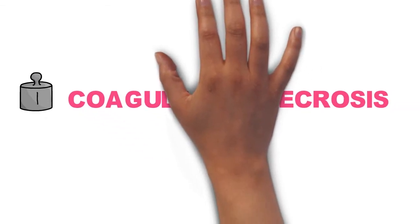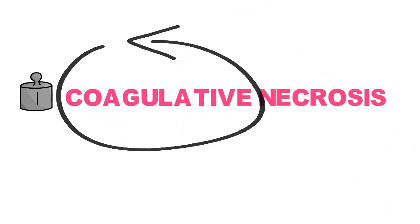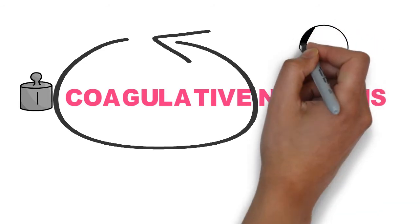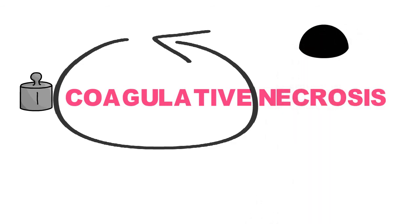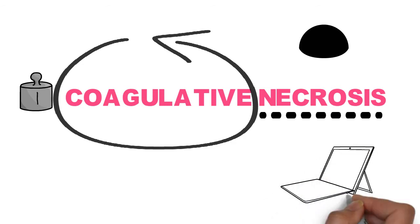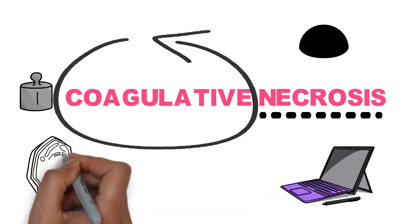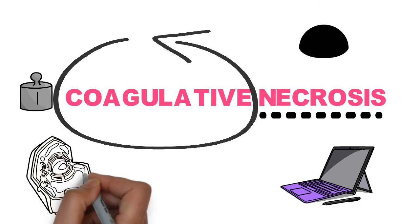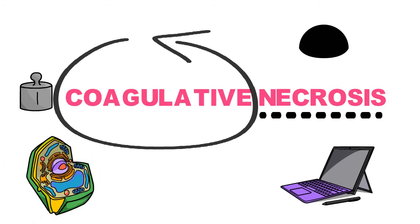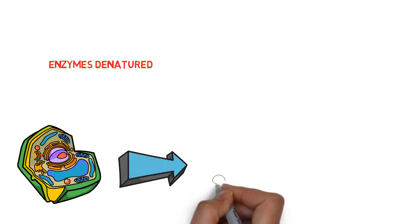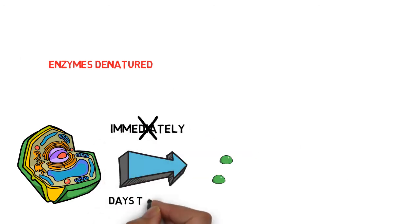The first pattern is coagulative necrosis. The literal meaning of 'coagulate' is to change into a solid or semi-solid state. The characteristic of coagulative necrosis is that the cell injury denatures both structural proteins and the cell's own enzymes. Because the cell's own enzymes are denatured, breakdown of injured cell components does not occur immediately, so the structure is maintained for a few days or weeks.